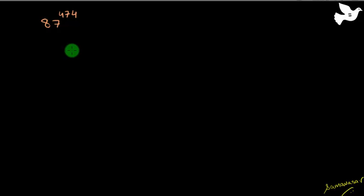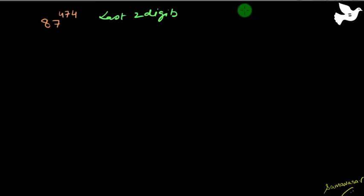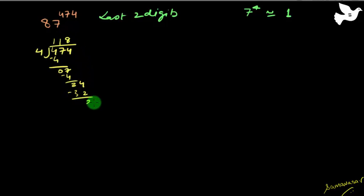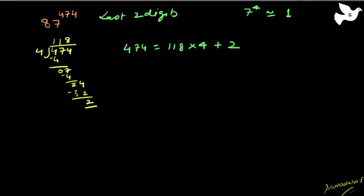Now let's take another example — this is more complicated. If you're able to follow this, you've understood everything covered so far. We have 87 raised to the power 474 and we need to find the last 2 digits. Remember that 7 raised to the power 4 ends in 1. So divide the power 474 by 4: 474 equals 118 multiplied by 4 plus 2, so the remainder is 2.